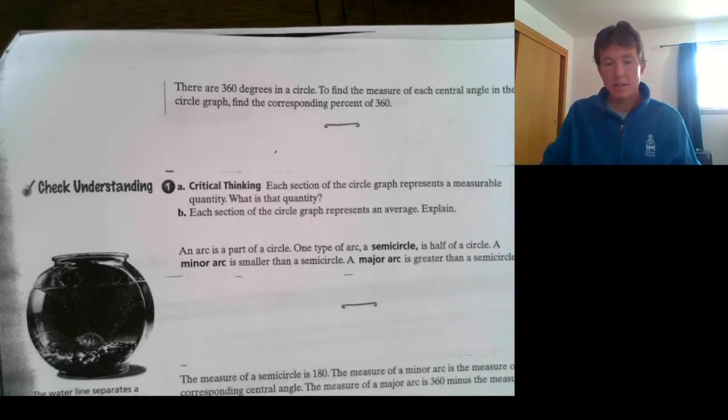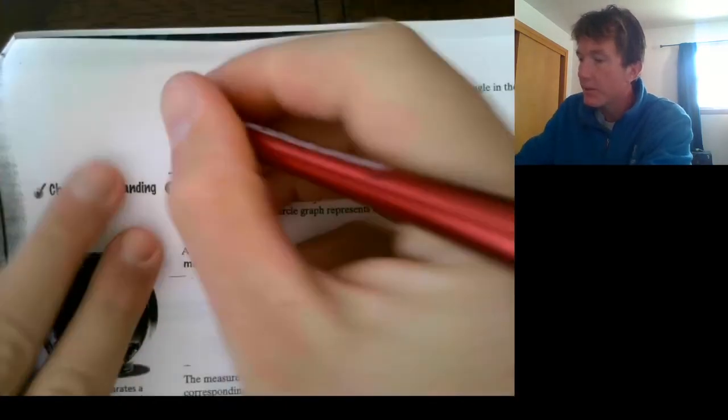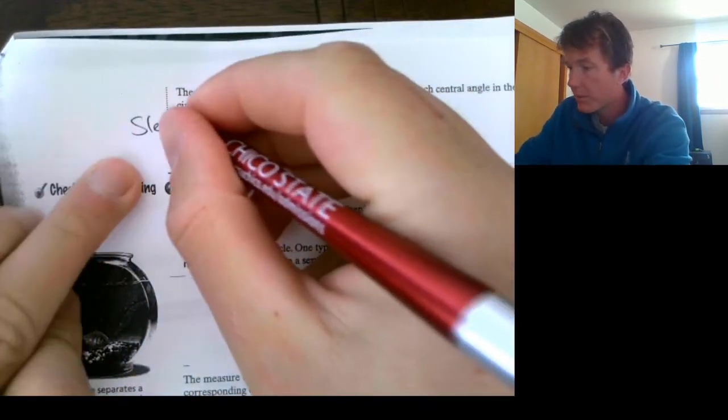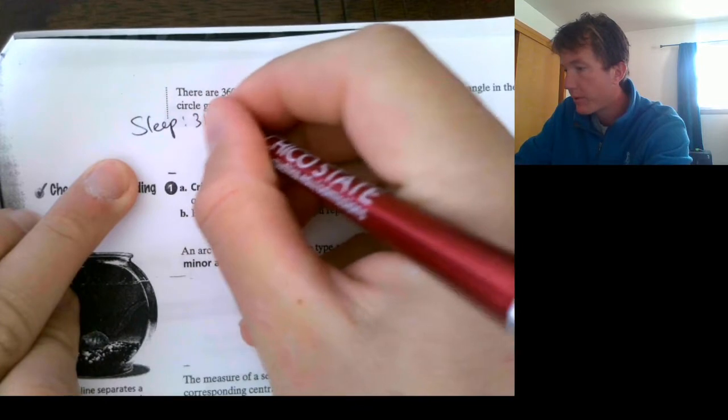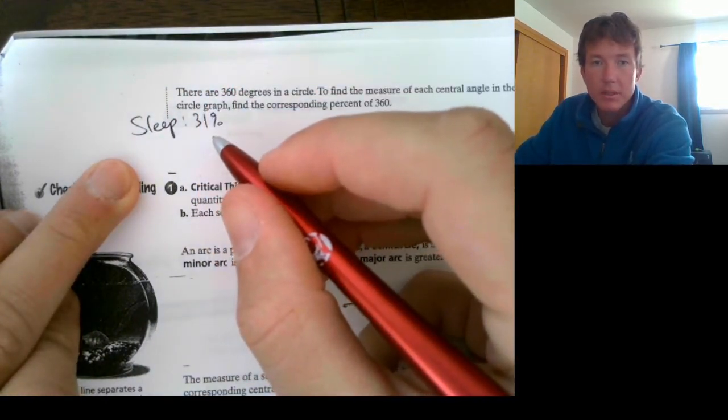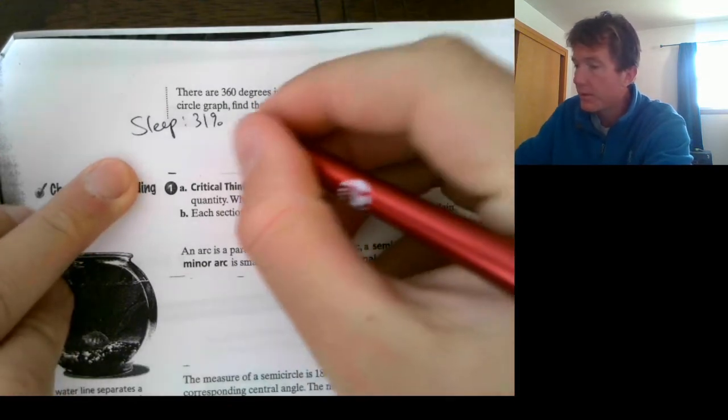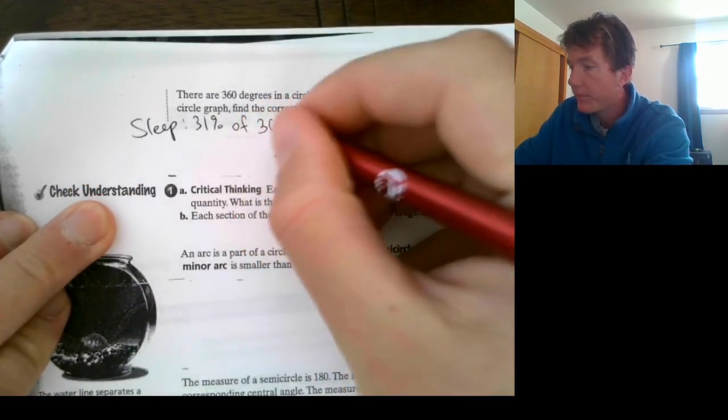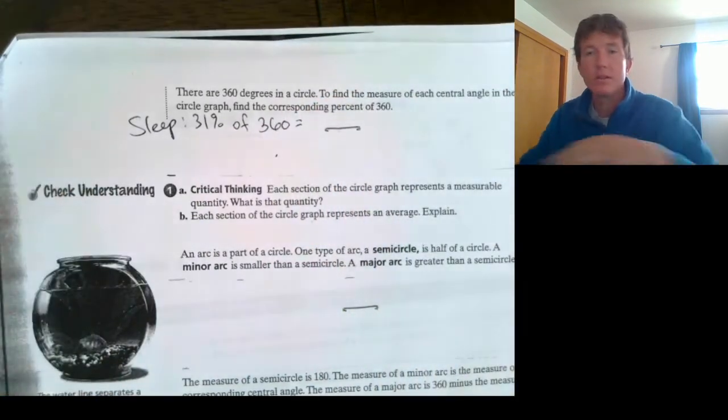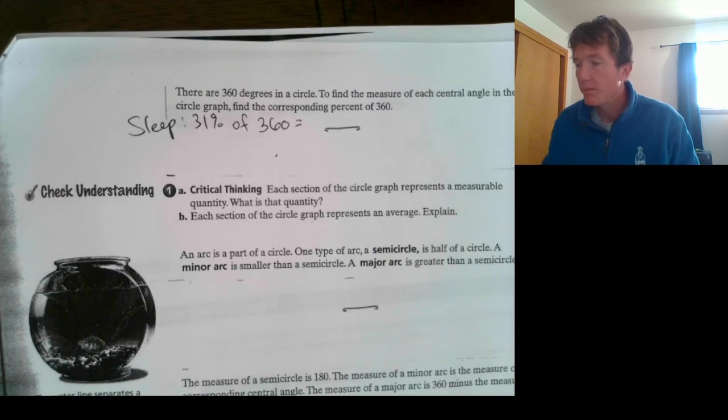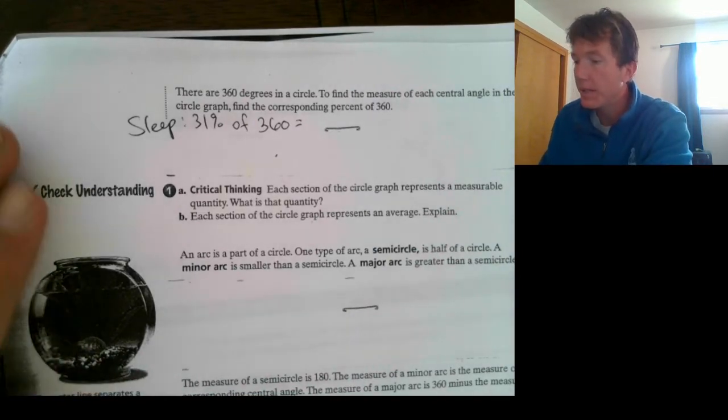So, let's look at it. Each percentage was given. The first one was sleep. Okay, that was 31%. We want to find the angle of 31% of a circle. So, in a circle we have 360 degrees. So, you want to find out what 31% of 360 is.